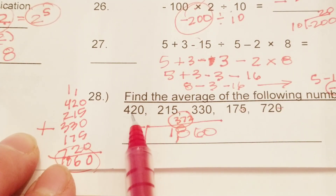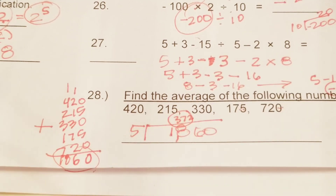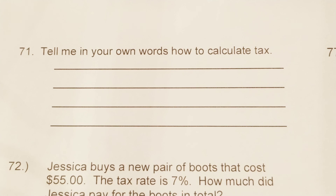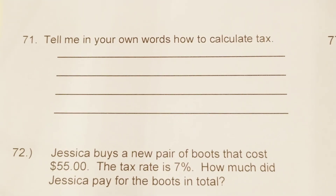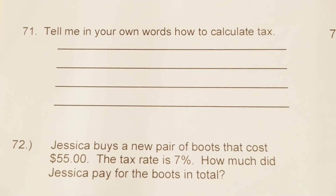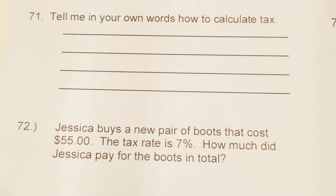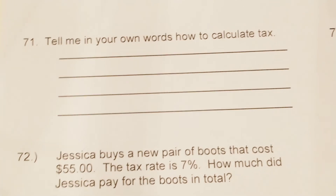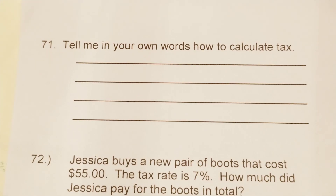Number 71 — because I have not gone over calculating tax with you yet, I will make this an extra credit problem. But I wanted to talk about calculating tax. You guys are savvy — some of you have cell phones, your own bank cards. So number 71 is going to be an extra credit problem because I have not taught this yet.